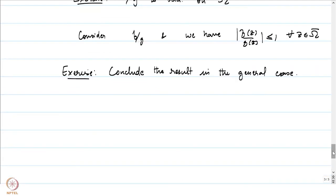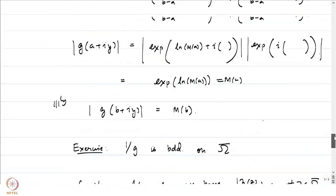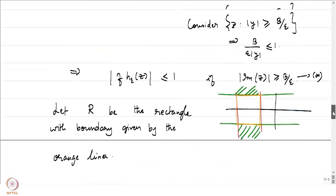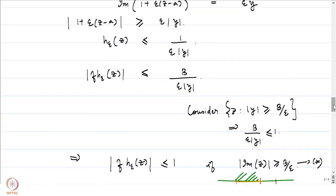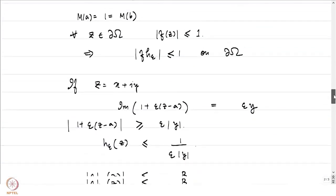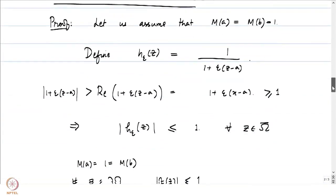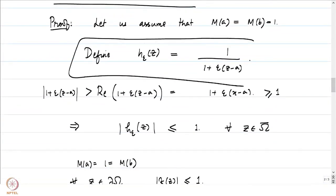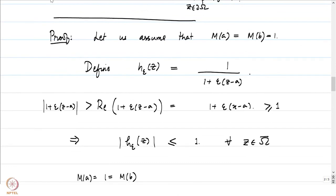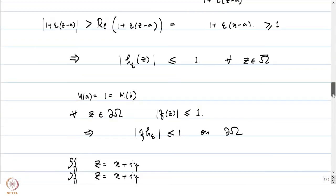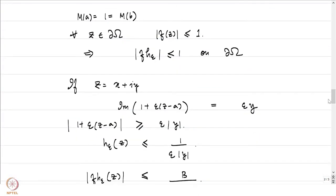In this entire theorem, what we did was introduce an auxiliary function h_ε, and using it we reduced the problem to applying the maximum modulus principle on some bounded domain. That is precisely what is referred to as the Phragmén-Lindelöf method.